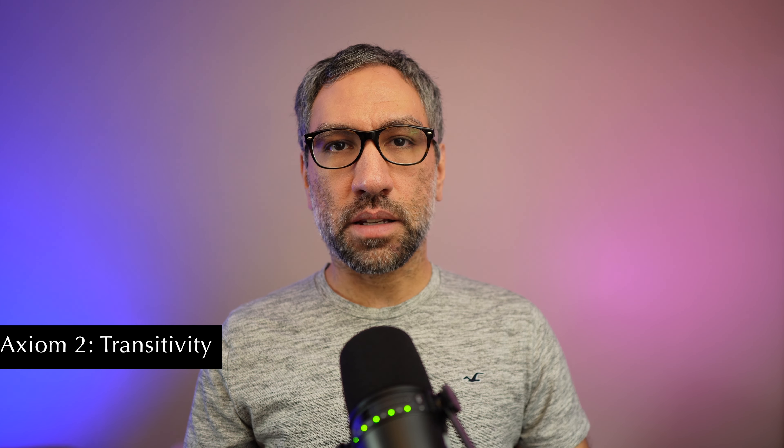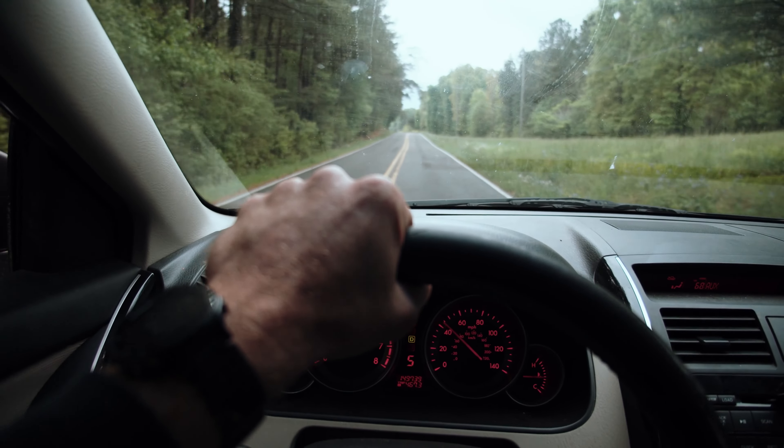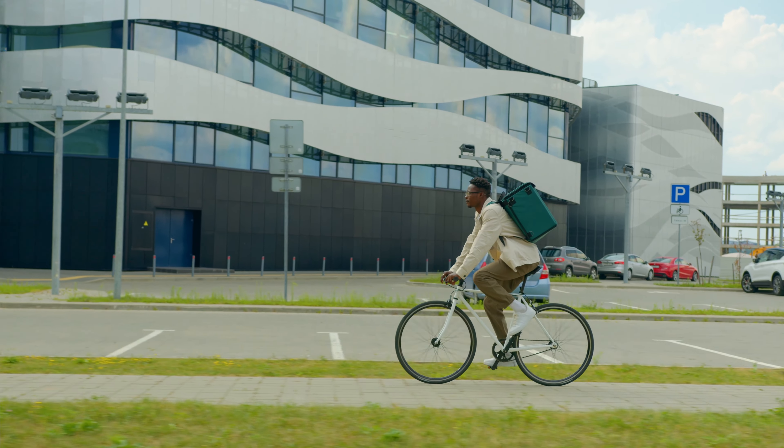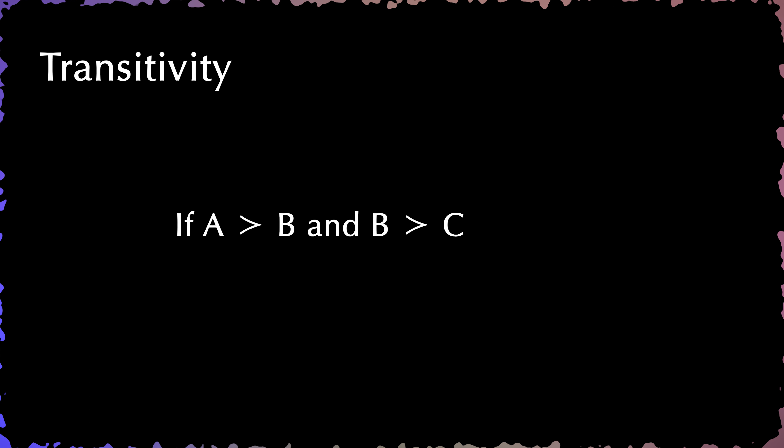Transitivity, our second axiom, demands logical consistency in your preferences. Imagine you're selecting your mode of transportation — say a car, bicycle, or walking. If you prefer a car to a bicycle, say because it's fastest, and you favor a bicycle over walking for its convenience, then transitivity ensures that you also prefer a car over walking. If an individual prefers option A to option B and prefers option B to option C, then they must also prefer option A to option C. In simpler terms, preferences are consistent and do not involve logical contradictions — there is a logical harmony present.